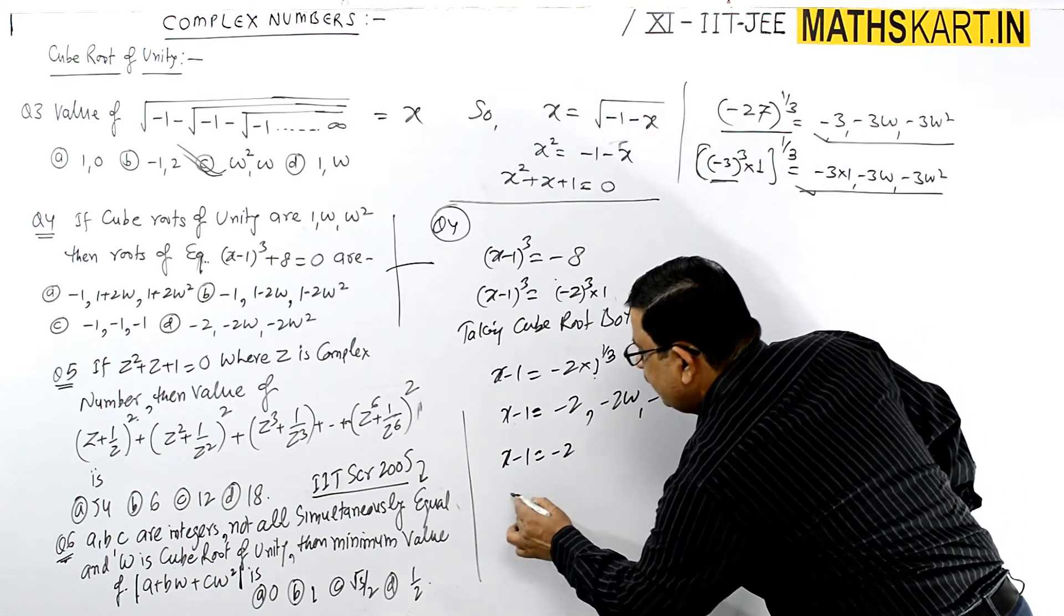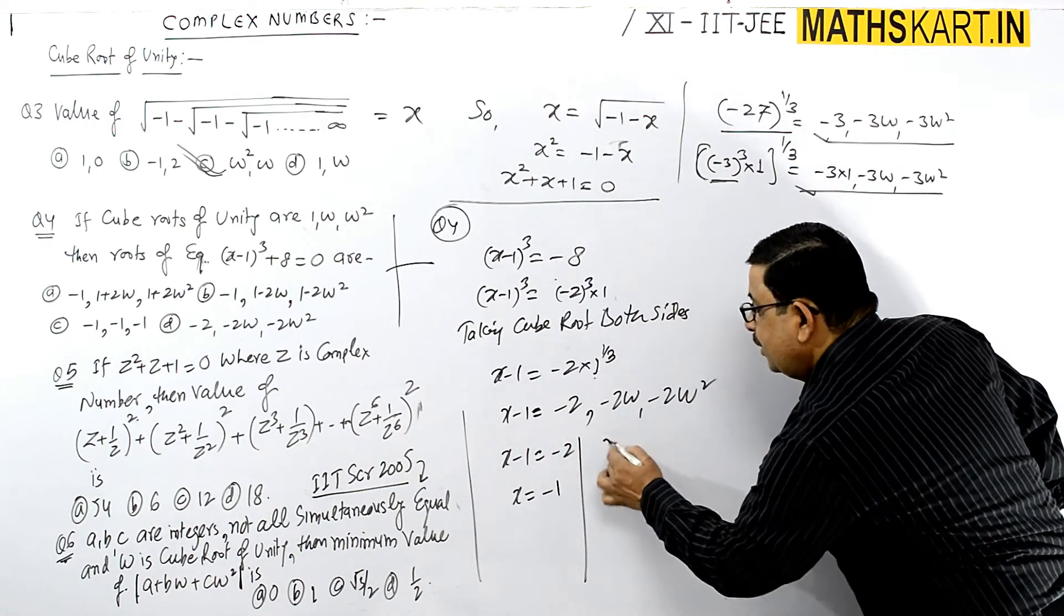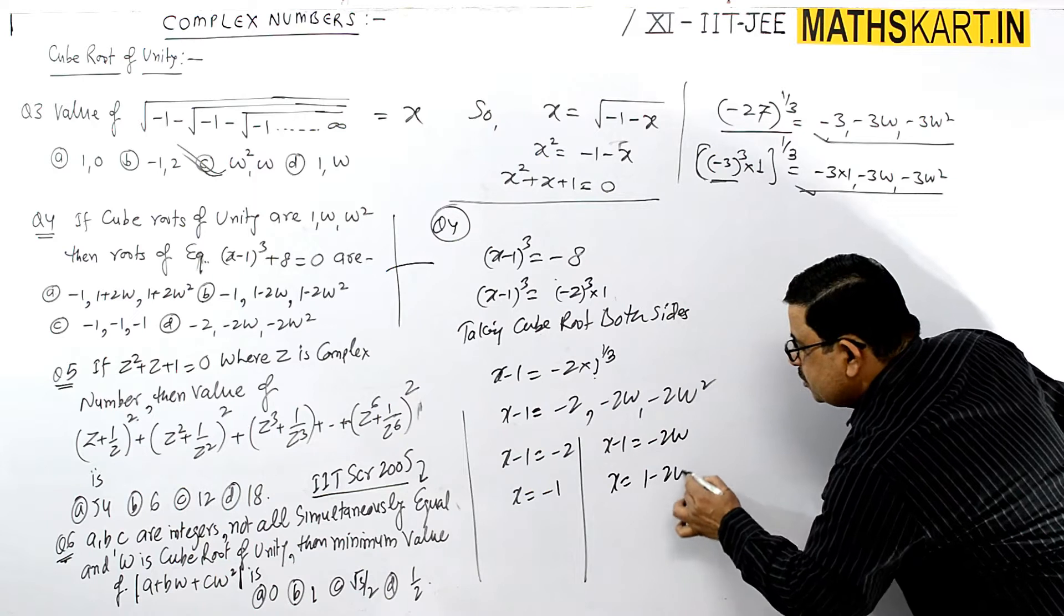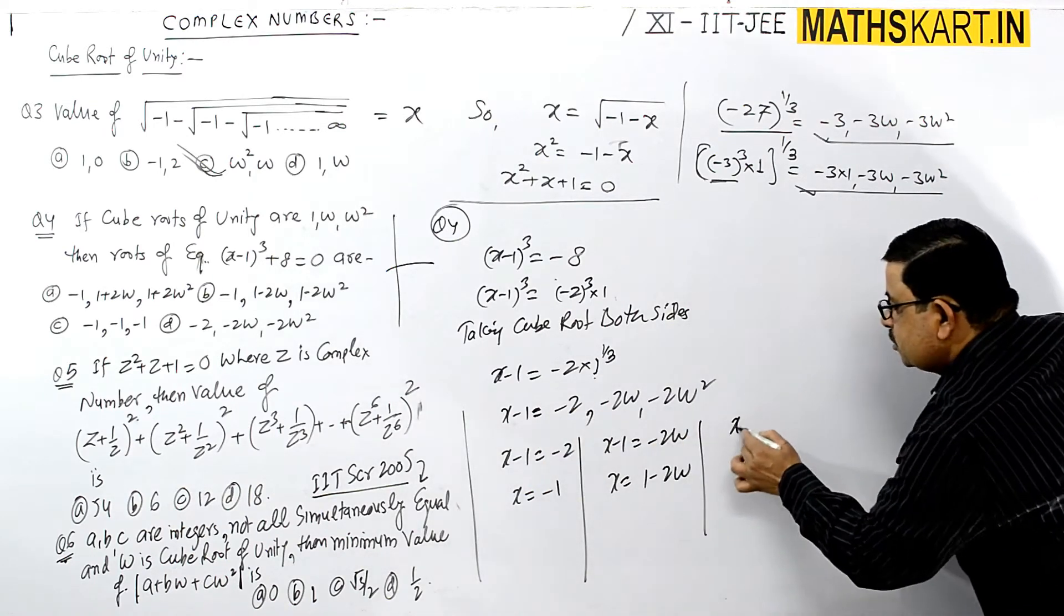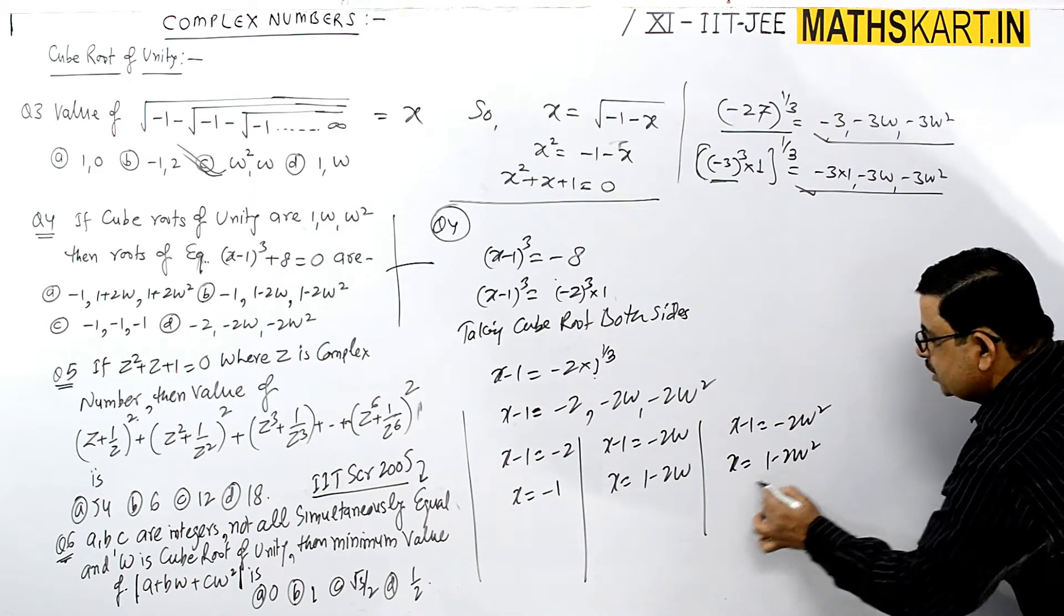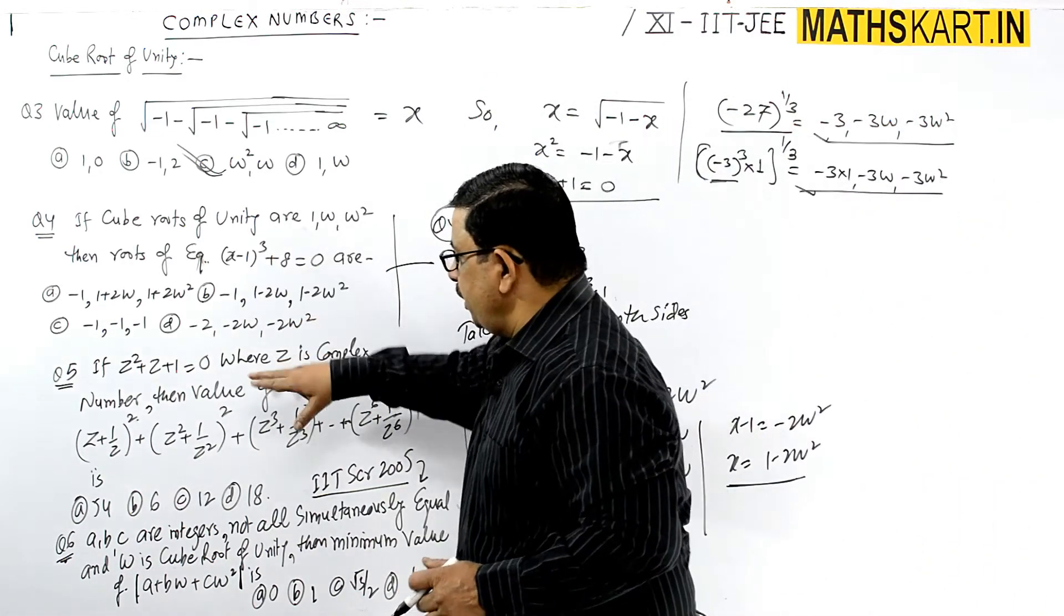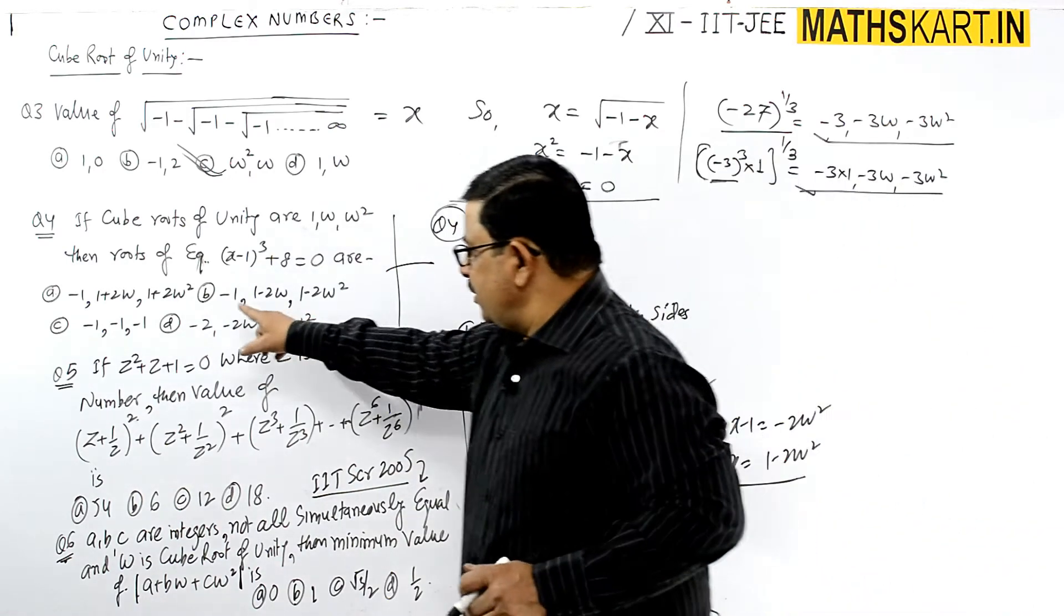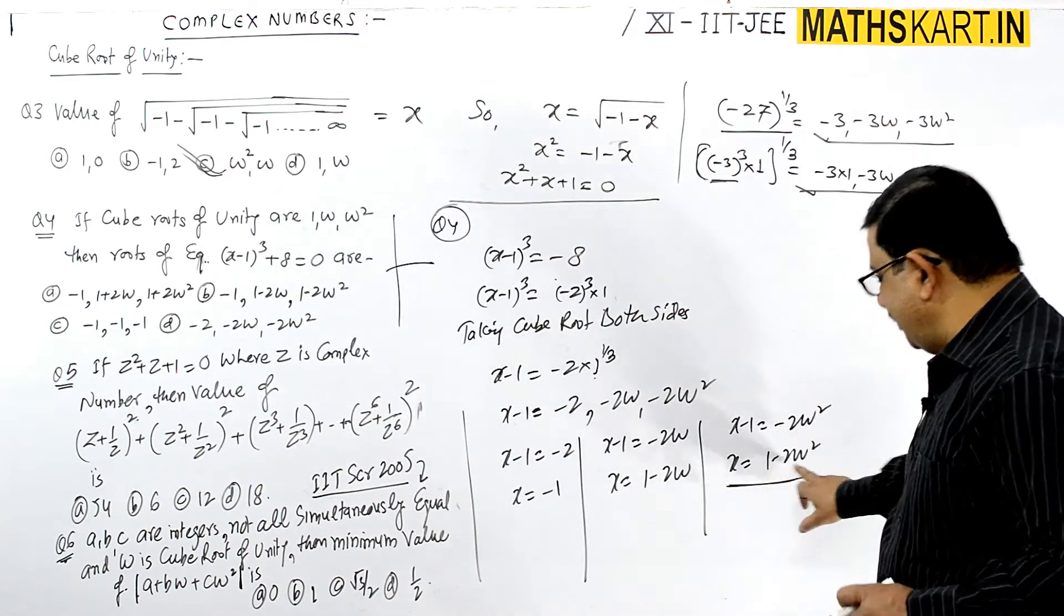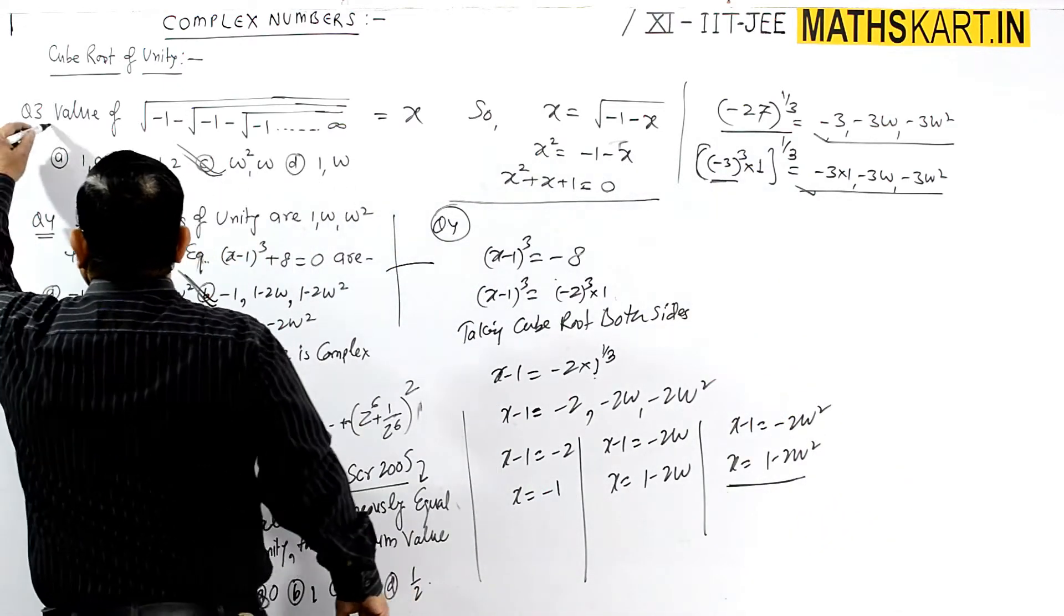When x minus 1 equals minus 2, x equals minus 1. When x minus 1 equals minus 2 omega, x equals 1 minus 2 omega. And x minus 1 equals minus 2 omega square gives x equals 1 minus 2 omega square. Therefore, B option is correct.